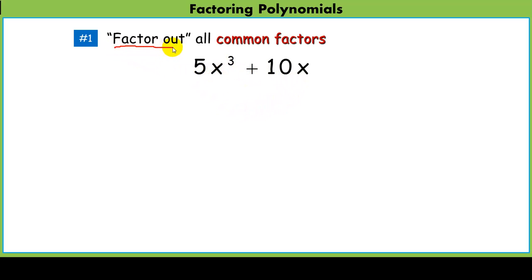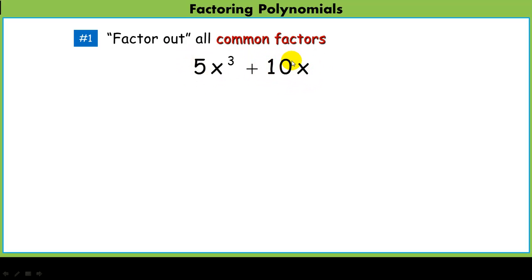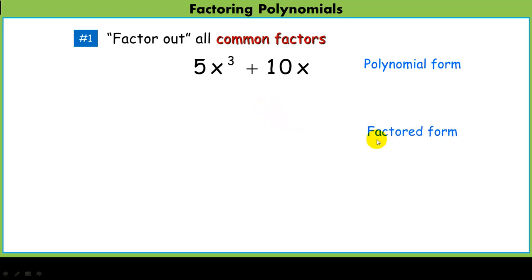It says factor out all the common factors. Right now it's a polynomial — this term plus this term, each of the terms are monomials. This is in its polynomial form. What we're going to do when we factor something is turn it into a factored form. Instead of having two things that we're adding together, we want to have a couple of things that we're multiplying.